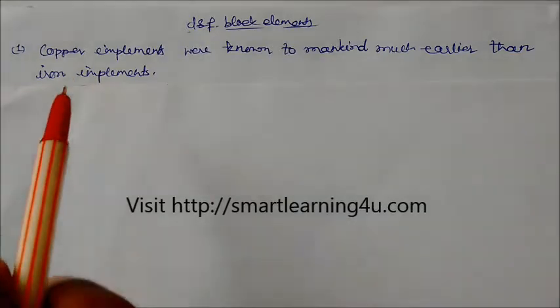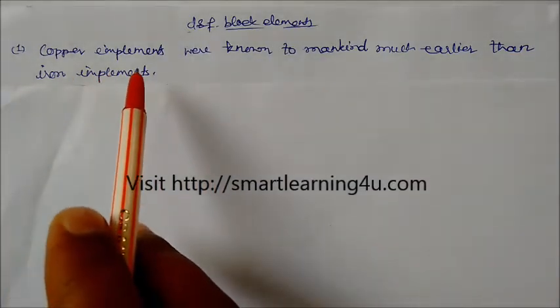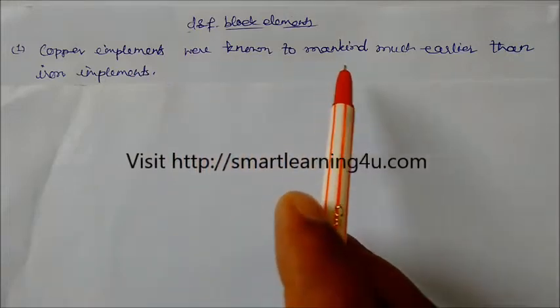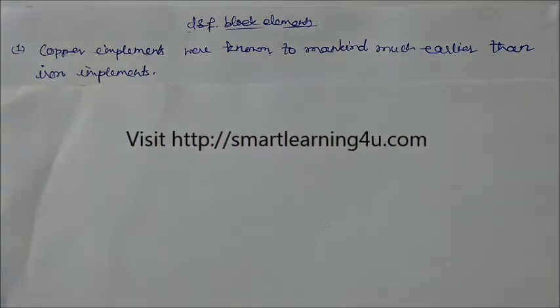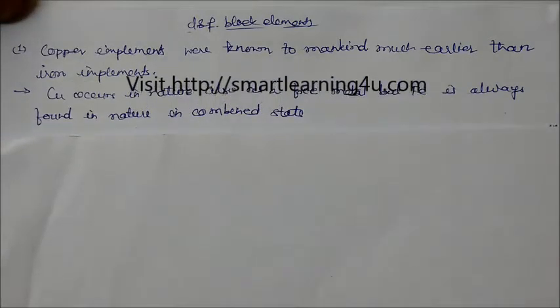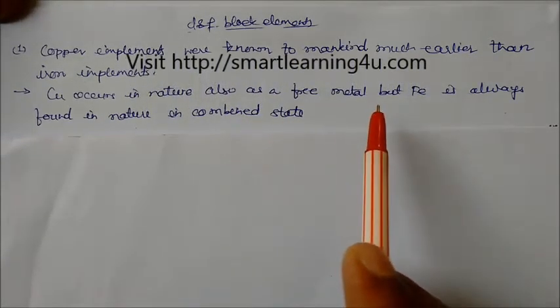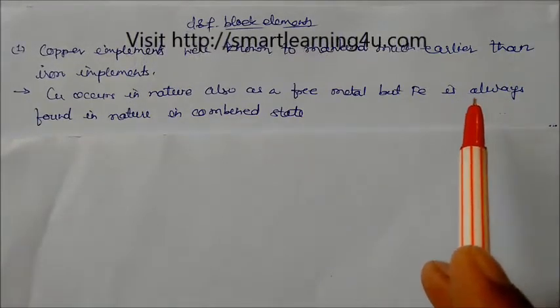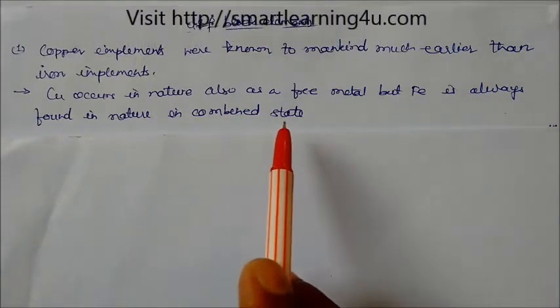Question: Copper implements were known to mankind much earlier than iron implements. Answer: Copper occurs in nature as a free metal.